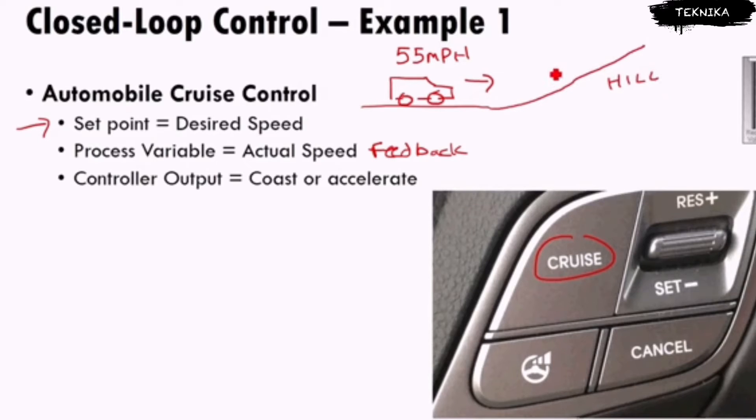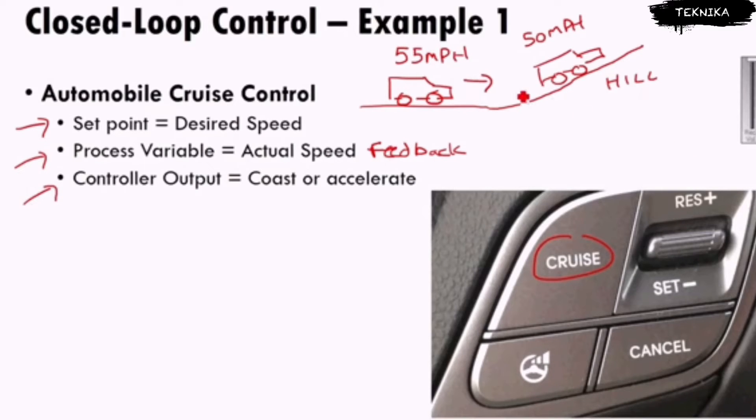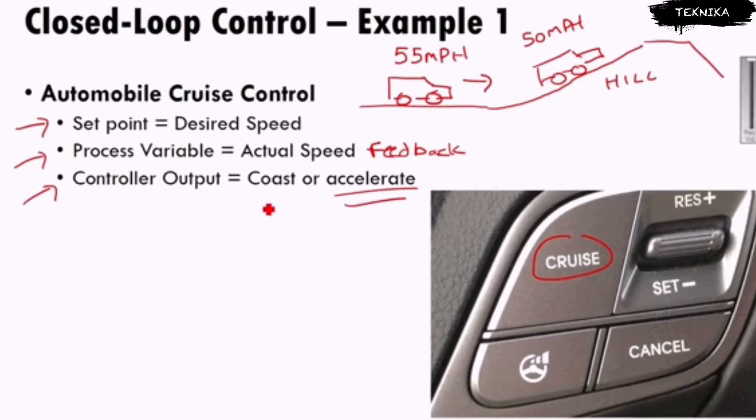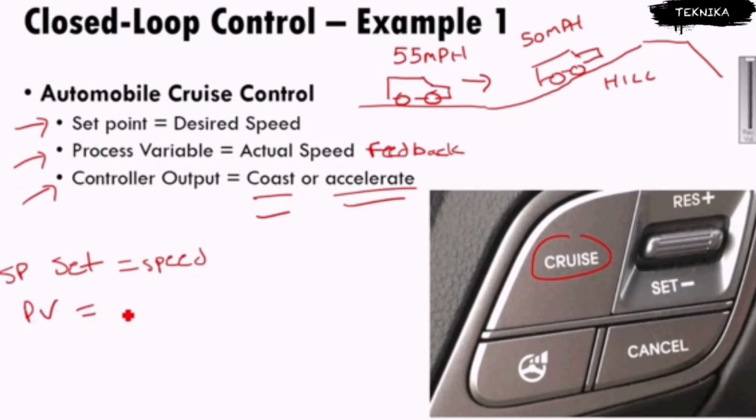Eventually this car is going to hit a hill. When I hit a hill, I'm going uphill with my car and my speed drops to 50 miles per hour. That feedback, the process variable, says I'm going too slow, so the controller output's going to say I need to accelerate a little bit, I need to accelerate on the gas because I'm going up a hill. Or if I'm going down a hill later on, I might need to coast. The idea is my set point is the desired speed. We call this set point SP. The process variable is my actual speed.